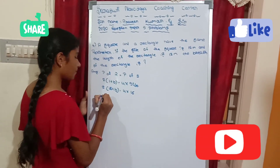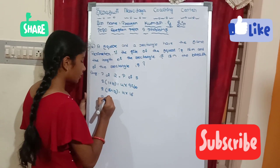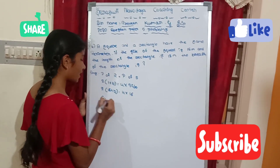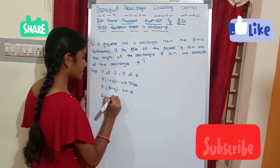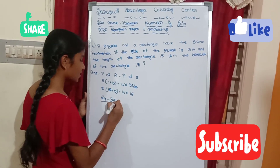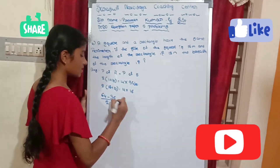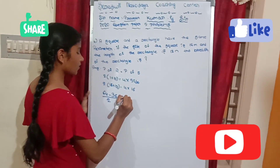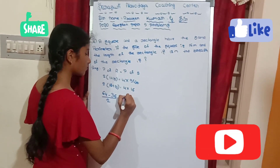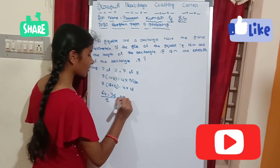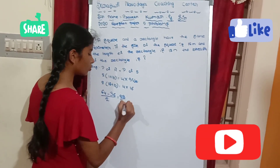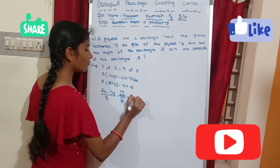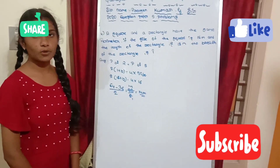Solving: 2 into (18 plus B) equals 64. So 18 plus B equals 64 minus 36, divided by 2, equals 28 divided by 2, equals 14 meters. So breadth is equal to 14 meters.